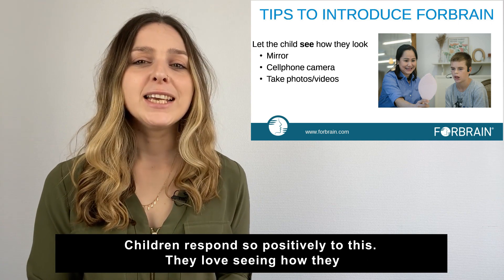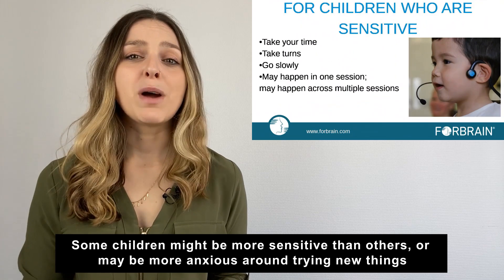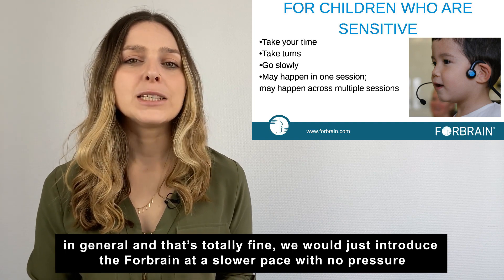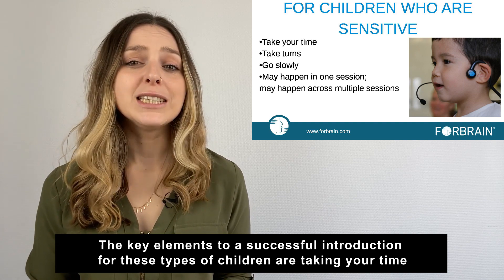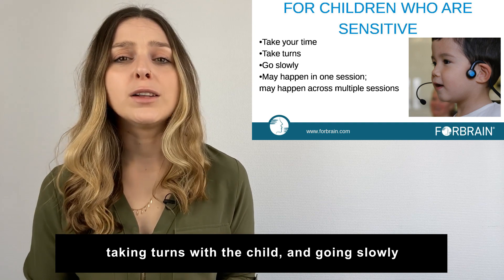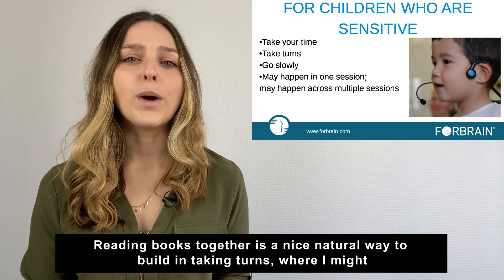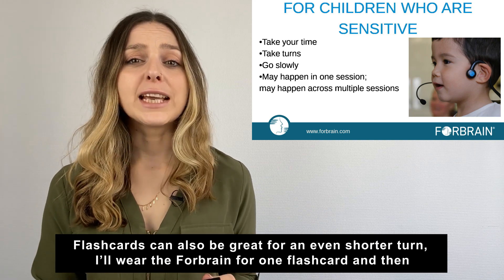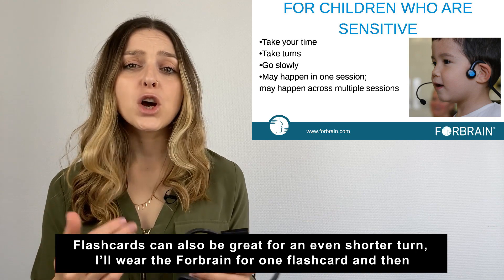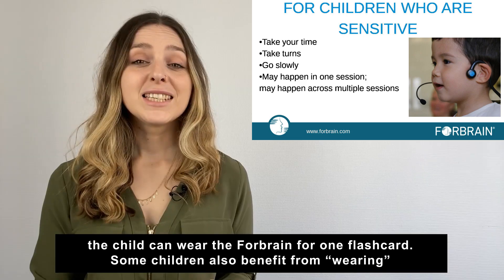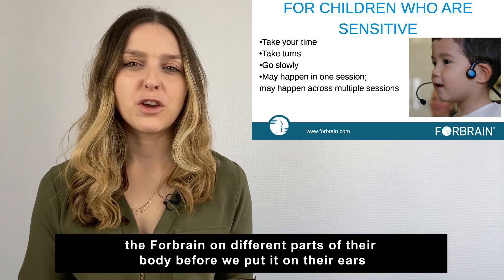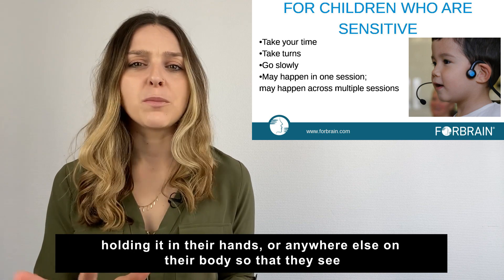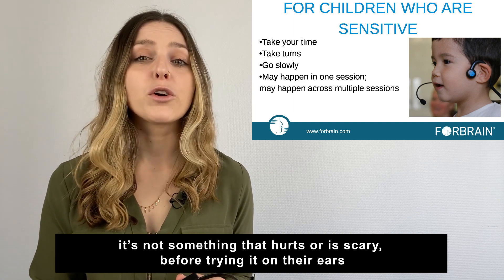Children respond so positively to this — they love seeing how they look with the Forebrain on because they think they look super cool. Some children might be more sensitive than others or may be more anxious around trying new things, and that is totally fine. We would just introduce the Forebrain at a slower pace with no pressure. The key elements to a successful introduction for these types of children are taking your time, taking turns with the child, and going slowly. Reading books together is a nice natural way to build in taking turns, where I might wear the Forebrain for one page and then the child wears it on the next page. Flashcards can also be great for an even shorter turn. Some children might also benefit from wearing the Forebrain on different parts of their body before putting it on their ears — on their leg, their arm, or holding it in their hands — so that they see that it doesn't hurt or feel scary before trying it on their ears.